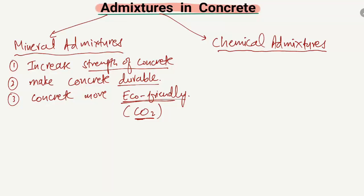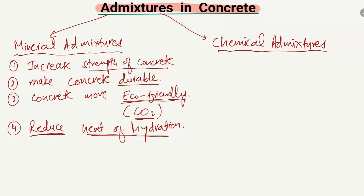The fourth benefit is that mineral admixtures are used to reduce the heat of hydration. When we pour concrete into any structural member, a higher amount of heat is released during the initial fresh state. By adding mineral admixtures, this early reaction between cement and water is reduced, thus reducing the heat of hydration and helping to make the concrete stronger.